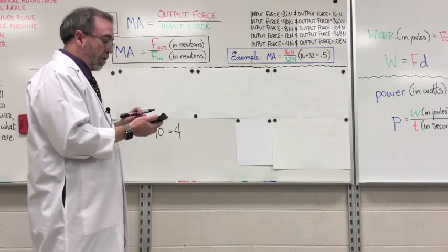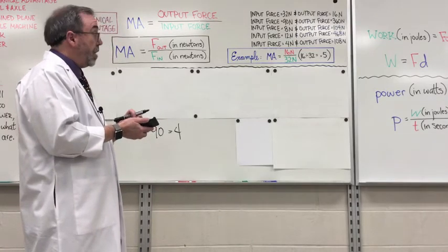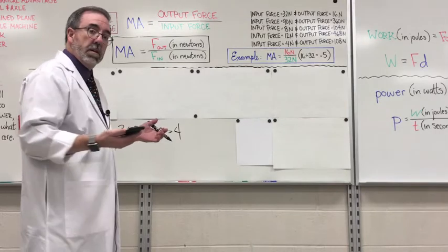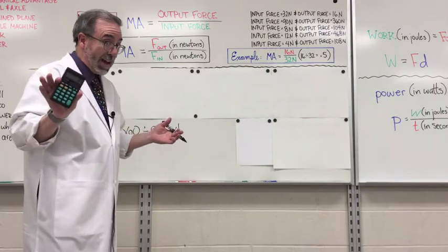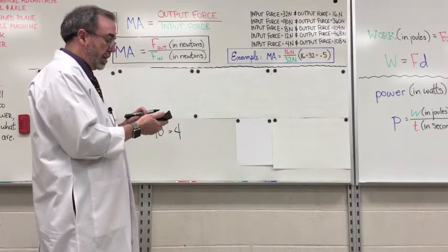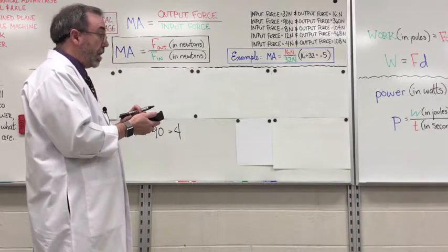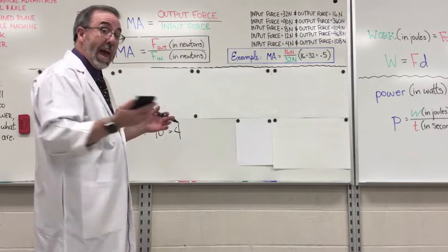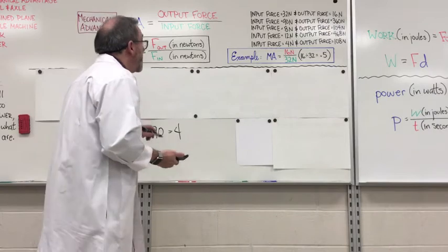Let's go with the next one. 104 divided by 8 equals, I hope you got 13 because that's what I got. Next one is going to be 468 divided by 12 equals 39.